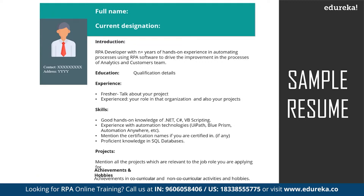After educational qualifications, mention your work experience. In this section, include your designation, name of organization, duration of employment, and responsibilities in that job role. This section should also be in chronological order. For example, if you worked from June 2017 to 2019 in a specific company, mention all the details related to it chronologically, then move on to your earlier work experience.